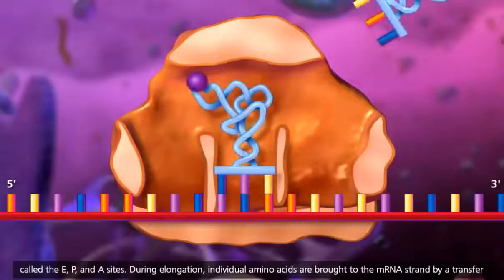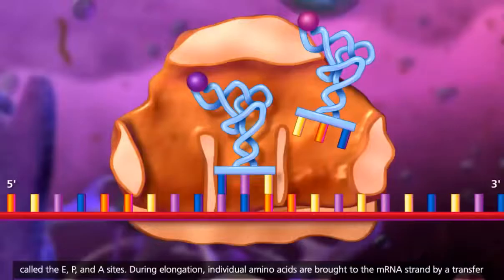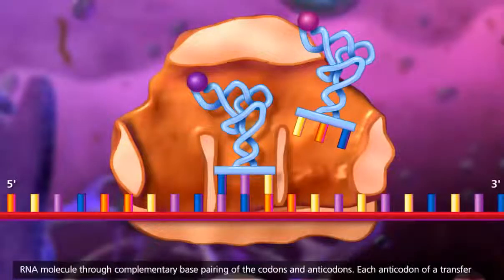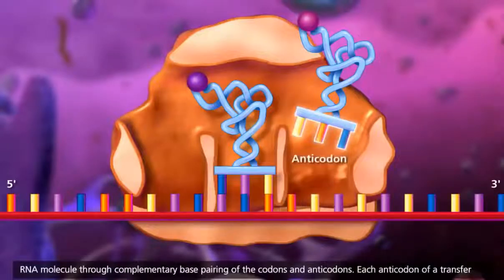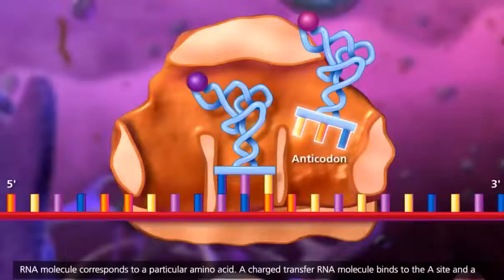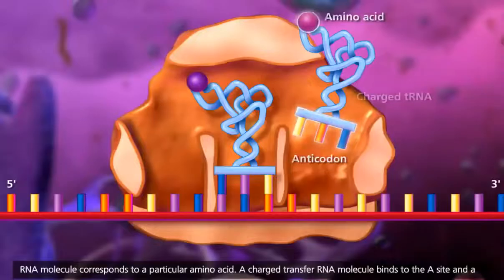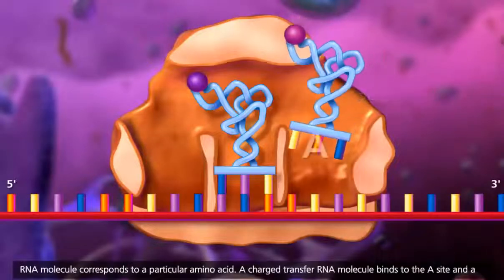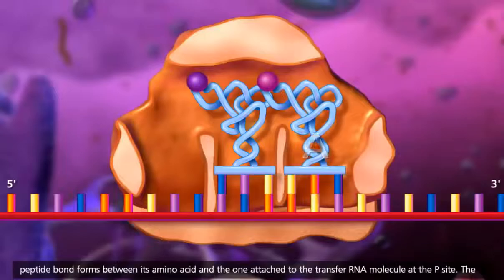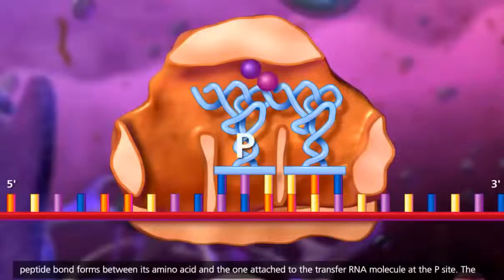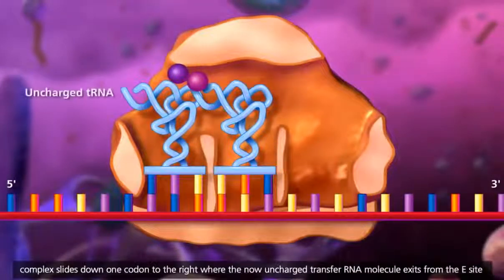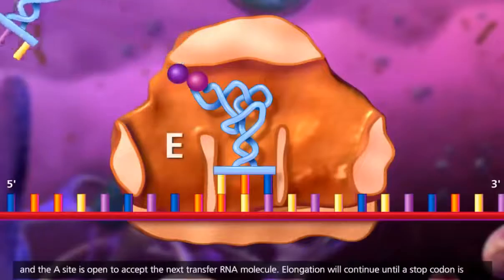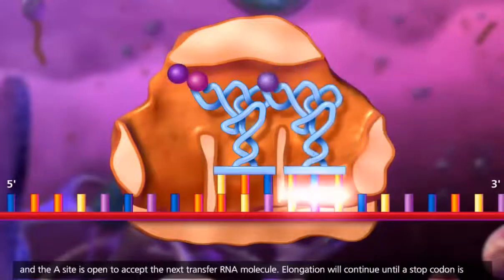During elongation, individual amino acids are brought to the messenger RNA strand by a transfer RNA molecule through complementary base pairing of the codons and anticodons. Each anticodon of a transfer RNA molecule corresponds to a particular amino acid. A charged transfer RNA molecule binds to the A site and a peptide bond forms between its amino acid and the one attached to the transfer RNA molecule at the P site. The complex slides down one codon to the right where the now uncharged transfer RNA molecule exits from the E site, and the A site is open to accept the next transfer RNA molecule.